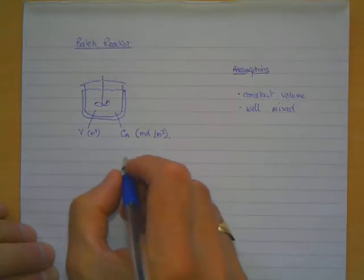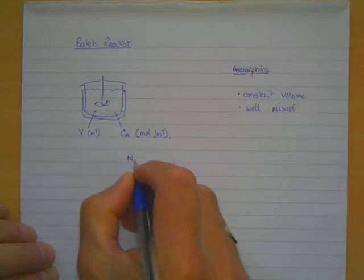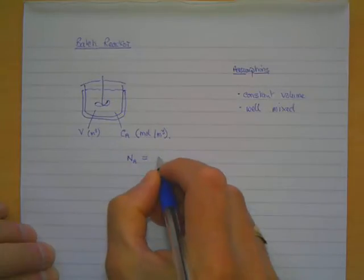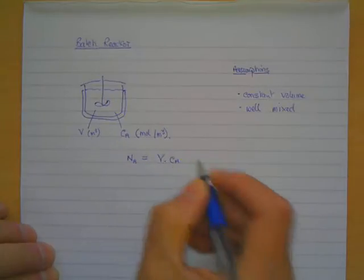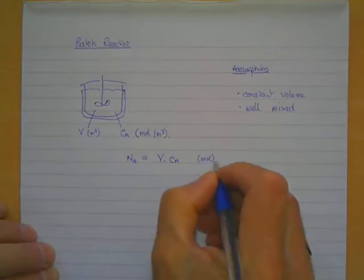We've got two variables there. We can add a third which is actually the number of moles of A, so the total number, and that's simply equal to the volume multiplied by the concentration, NA = V × CA, expressed in moles.